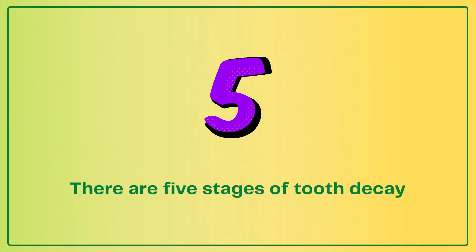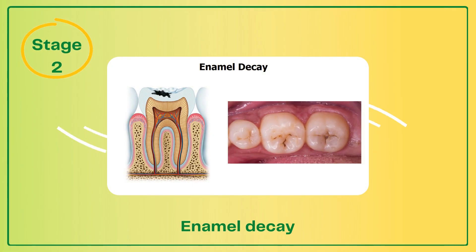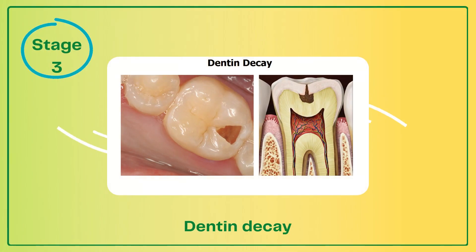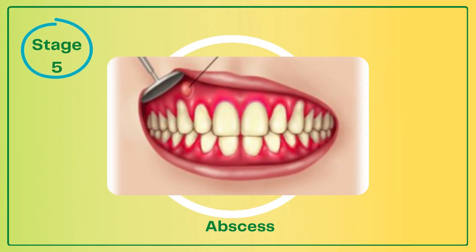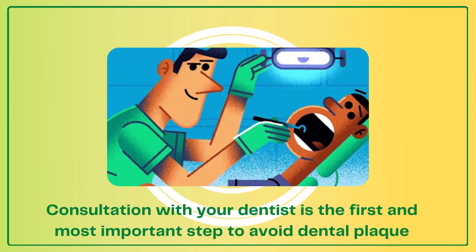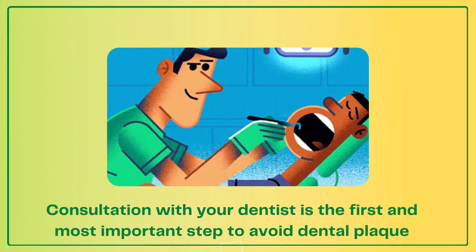There are five stages of tooth decay: Stage 1 – Initial Demineralization, Stage 2 – Enamel Decay, Stage 3 – Dentin Decay, Stage 4 – Pulp Damage, Stage 5 – Abscess. Consultation with your dentist is the first and most important step to avoid dental plaque.